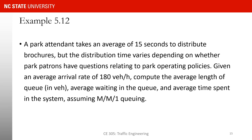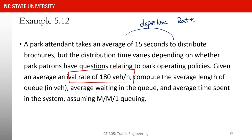Here is our MM1 example: a park attendant takes an average of 15 seconds to distribute a brochure, but service time varies depending on whether patrons have questions. The arrival rate is 180 vehicles per hour, and since both arrival and service times are stochastic, this is an MM1 system. We need to find the average queue length, average waiting time in queue, and average time spent in the entire system. Please pause the video and work through the example before continuing.